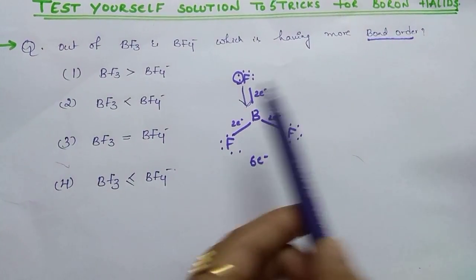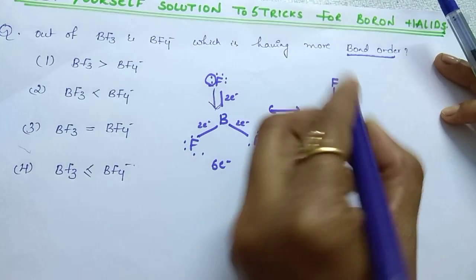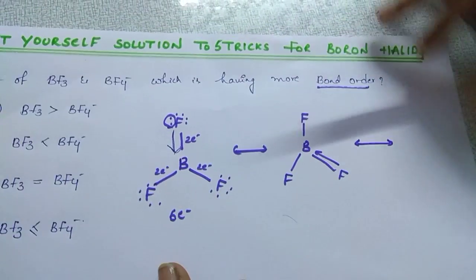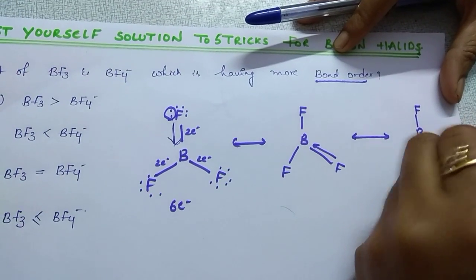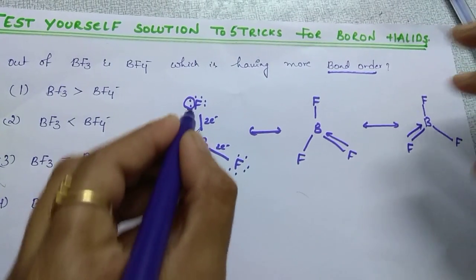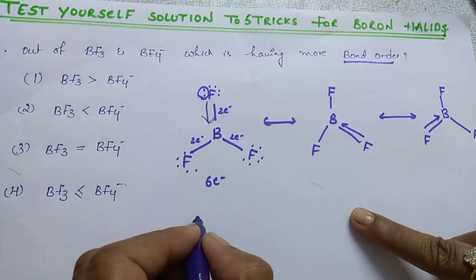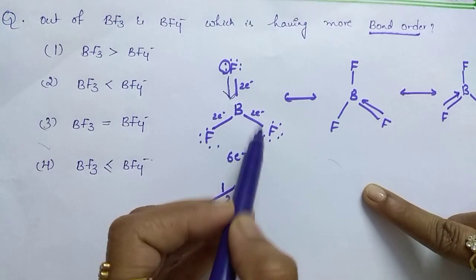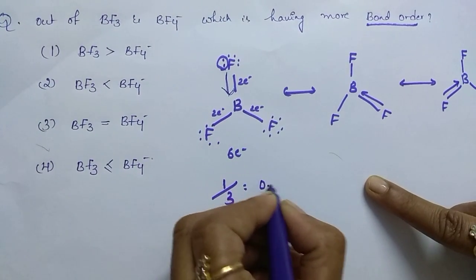So this fluorine may donate or you can say this fluorine may donate or this fluorine may donate. In this way, this bond actually, this bond is not fixed. This bond is just delocalizing between these three fluorines. So this contribution is 1 by 3. Why it is 1 by 3? Because it is just delocalizing between these three atoms, 1, 2, 3. So its contribution is 1 by 3 means 0.33.